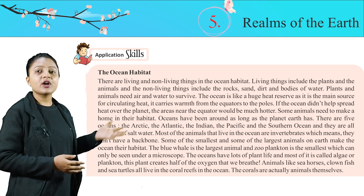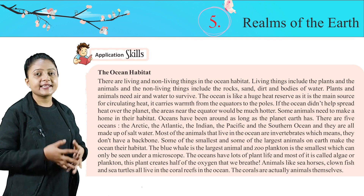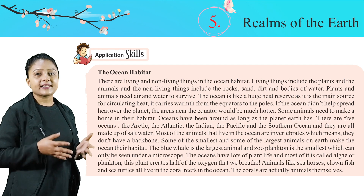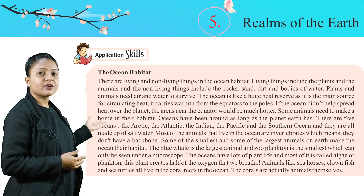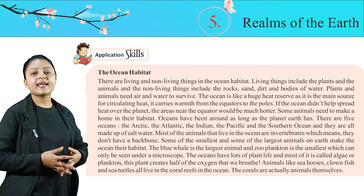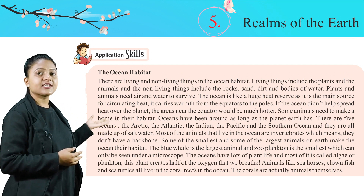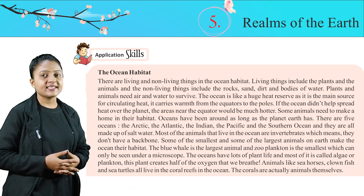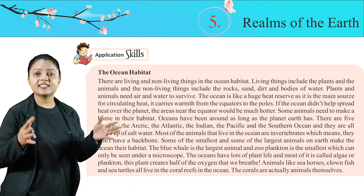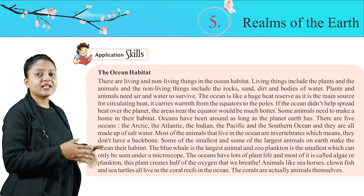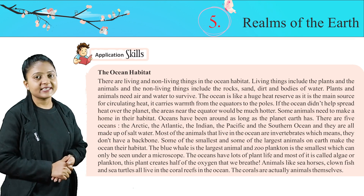The oceans have lots of plant life and most of it is called algae or plankton. This plant creates half of the oxygen that we breathe. Animals like seahorses, clownfish, and sea turtles all live in the coral reefs in the ocean. The corals are actually animals themselves.